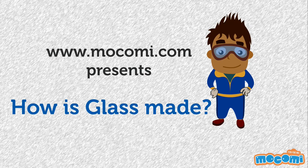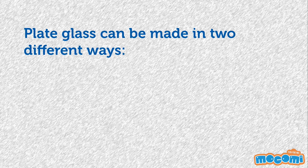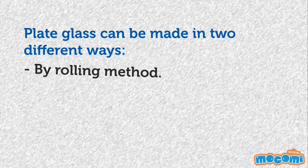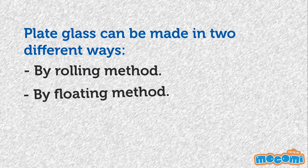How is Glass Made? Plate glass can be made in two different ways: by rolling or by floating.